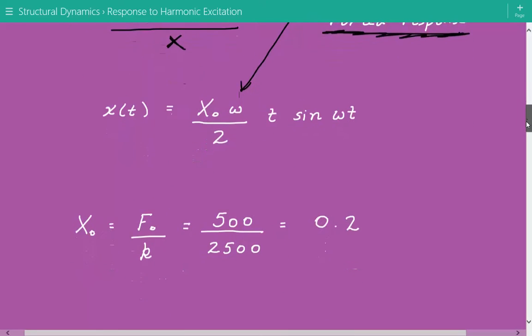Next, we're going to calculate x sub o. You can think of it as an equivalent static deflection that would result if you applied a force of magnitude f sub o, which is the amplitude of the harmonic force. The static deflection equals force divided by stiffness: 500 pounds divided by 2,500 pounds per inch. So x sub o equals 0.2 inches.